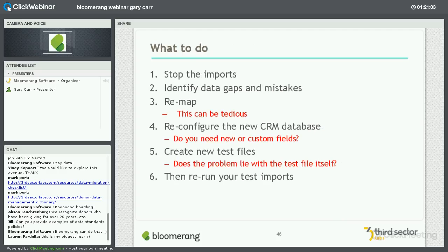What do you do? You stop what you're doing, stop the imports, go back and start identifying your gaps and the mistakes being made. A project timeline may get interrupted — you may be in the third month of a process that was supposed to take three or four months, and now you're going to have to take a couple of weeks to work through this. It's going to require remapping, which is tedious. You're going to have to go back and investigate your new CRM. The odds are it's the right CRM — you just need to look at the database and see what fields are missing, not configured correctly, or not interpreting data correctly.